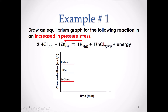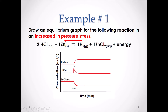Our equilibrium graph would appear as the following. Since we are shifting to the left and increasing the concentration of the reactants, we can see that HCl, at the point of the stress, will then increase and then flatline again, representing it as went back to equilibrium. Notice how this line goes up and then maintains — it does not go up and then back down. That is a common mistake. It increases and then flatlines. A shift to the left will cause both products to decrease.